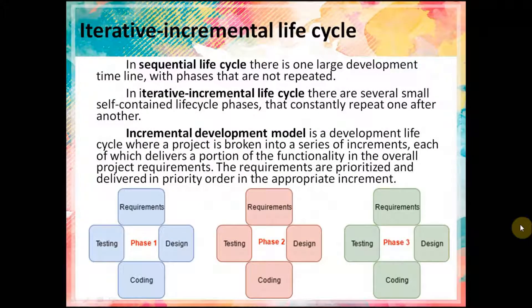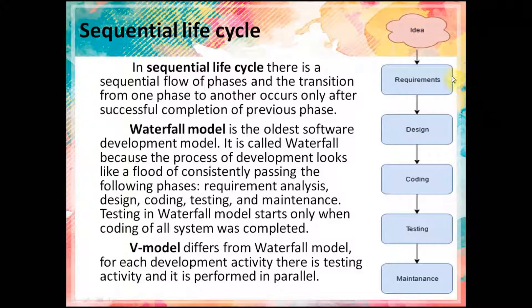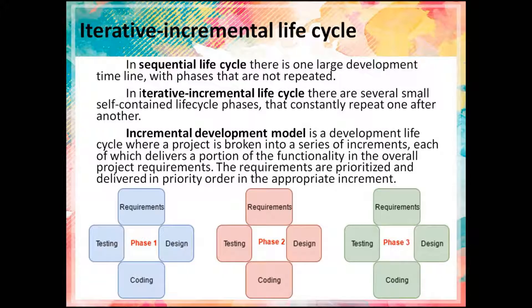In sequential life cycle there is one large development timeline with phases that are not repeated. Coding can be started only when the design phase is completed, and testing occurs only when coding of the whole system is completed — all phases are done once. In iterative or incremental life cycle there are several small self-contained life cycle phases that constantly repeat one after another.